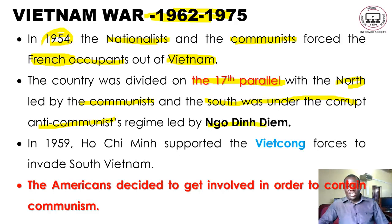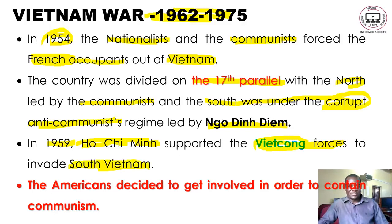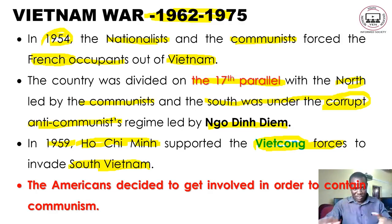The south was under the corrupt and anti-communist regime of Ngo Dinh Diem. In 1959, Ho Chi Minh supported the Viet Cong military forces to invade the south, because Ngo Dinh Diem was corrupt and anti-communist. So Ho Chi Minh supported military forces to take the southern government by force.